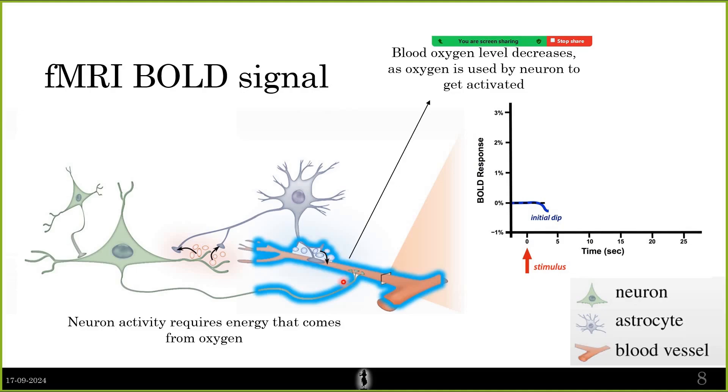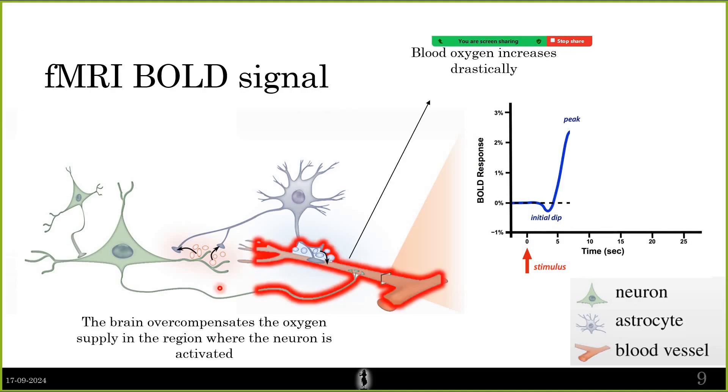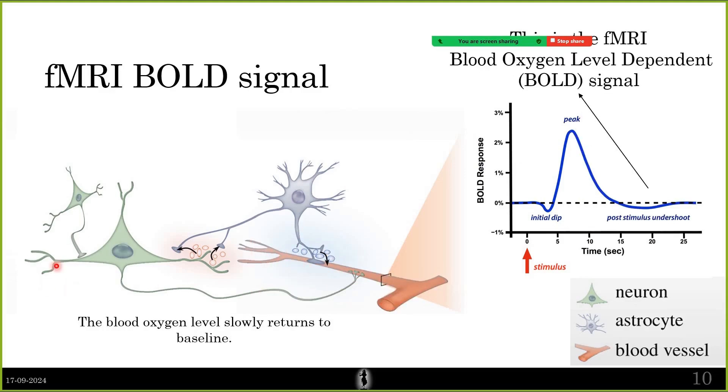Then what the brain does is overcompensate the oxygen supply in that particular region. Wherever the neuron was activated, the brain gives a lot of oxygenated blood in that particular local region. Because of this, the BOLD response increases and goes to a certain peak. Then slowly, if the neuron is not activated for a long time, it will slowly come down and come back to the baseline. Whenever a neuron is fired, you see the BOLD response as follows.